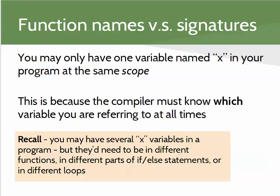For functions, they are declared at what is called global scope. Functions are not declared within other functions — there are no curly braces surrounding their declaration. Because of that, scope really doesn't help differentiate functions.